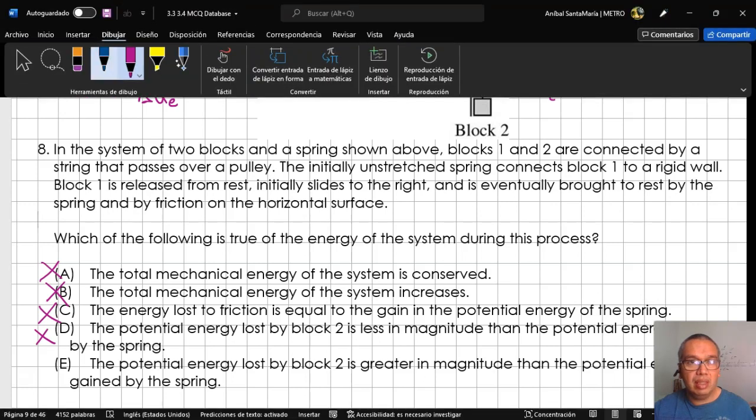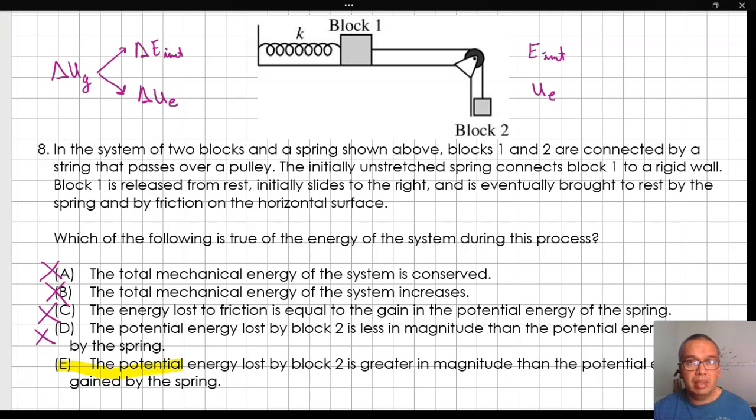E. The potential energy lost by block 2 is greater in magnitude than the potential energy gained by the spring. So, our best option is E.